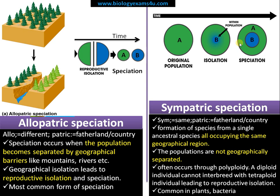Here, the newly formed species and the ancestral species all occupy the same geographical region — the population is not geographically isolated. This often occurs by polyploidy, which is very common in plants. The green-colored population may be diploid; all of a sudden, due to mutation, a sub-population forms that is polyploid. This sub-population cannot interbreed with population A, leading to reproductive isolation and finally forming two species A and B.